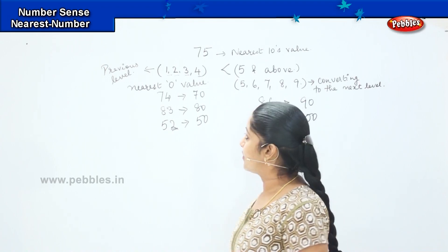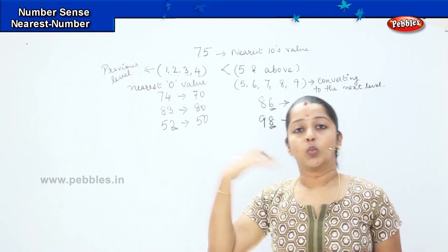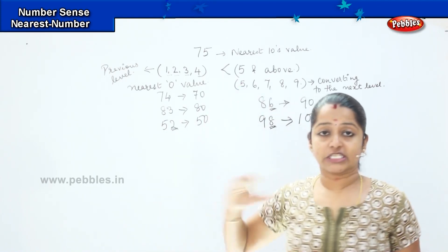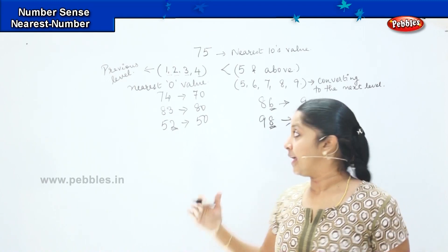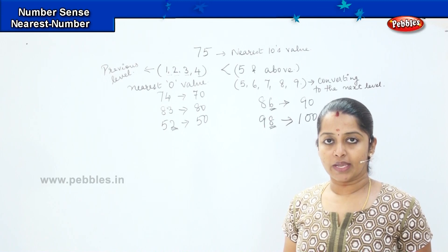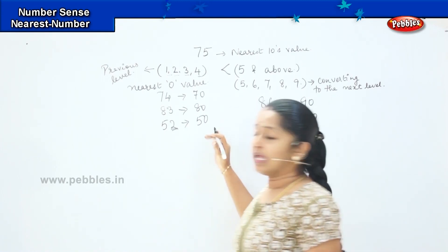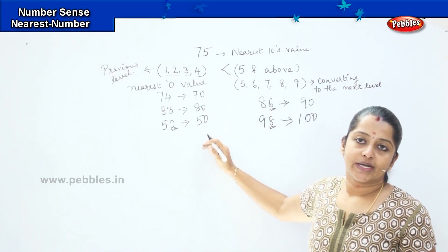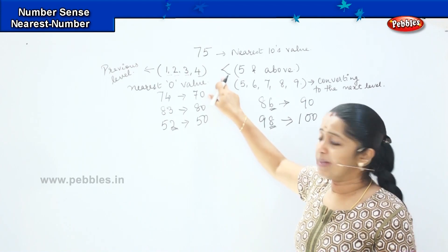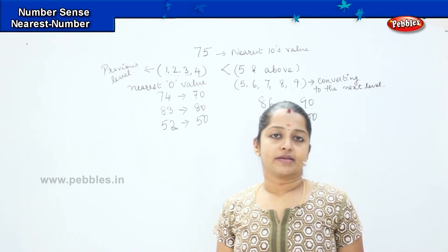So what did you learn, children? Whenever a number falls from 1 to 4, we convert it to the previous tens digit. And whenever a number is 5 and above, we convert it to the next tens digit. The same rule applies even with hundreds and thousands. This is the basic rule for converting to the nearest tens or nearest hundreds.